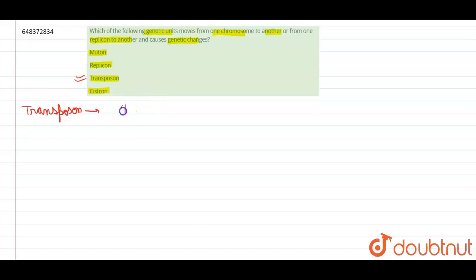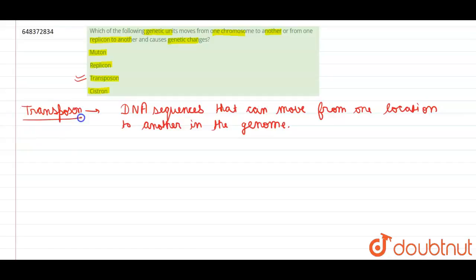Transposomes are the DNA sequences that have the capability to move from one location to another in the genome. So this is the correct answer. Let's see other options also.